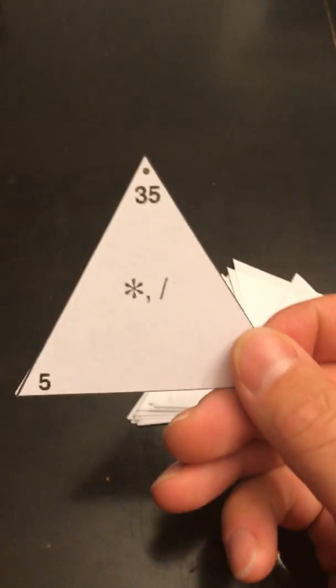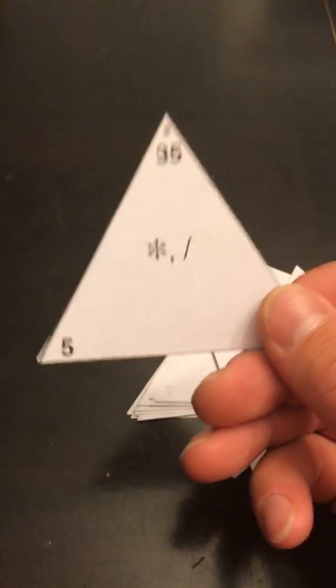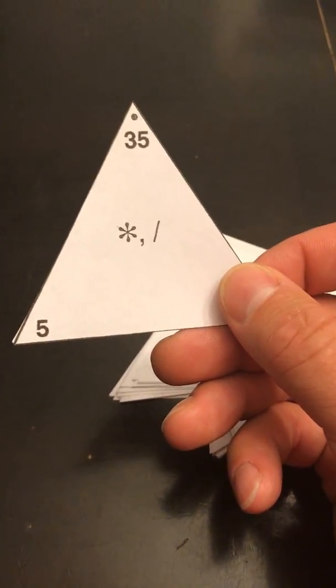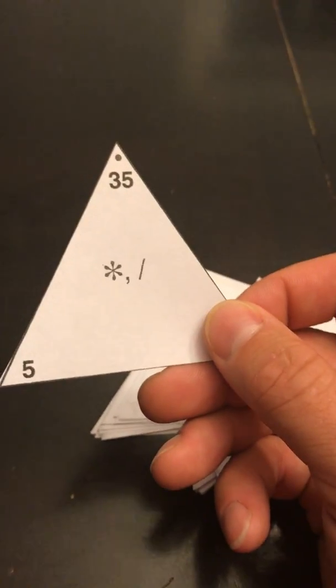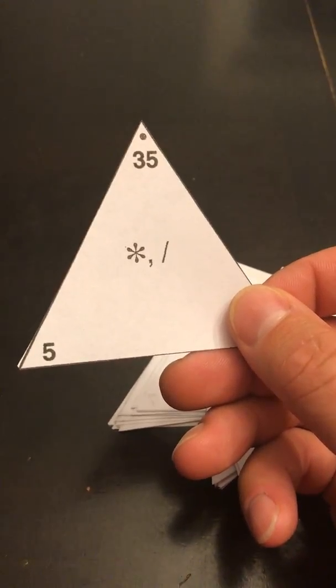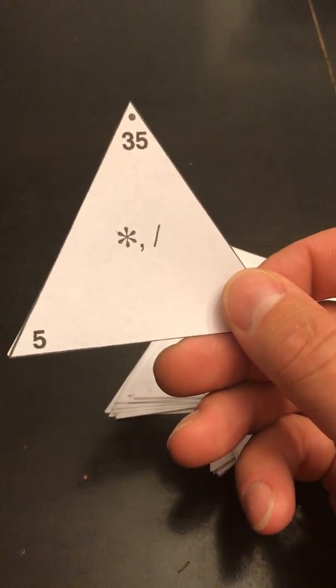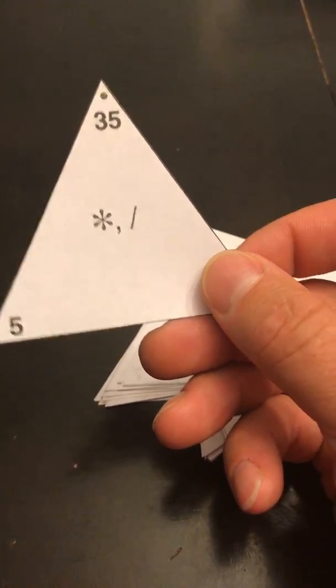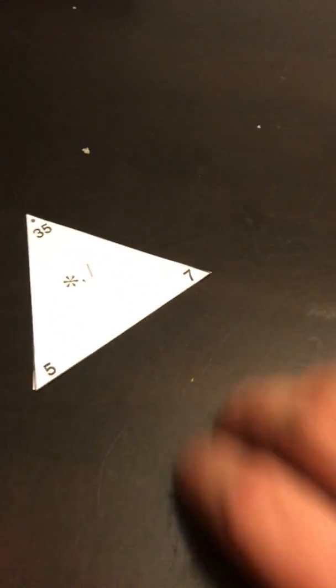I'll grab the top corner here and I'm gonna get 35 and 5. My job is to figure out what's underneath my thumb. So I could think 5 times what is 35, or 35 divided by 5 is what. I know that 7 times 5 is 35, so my missing number that I've covered up must be 7.